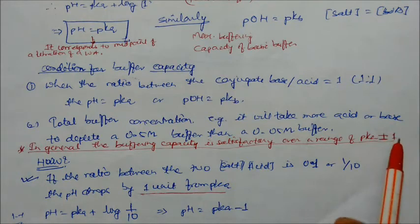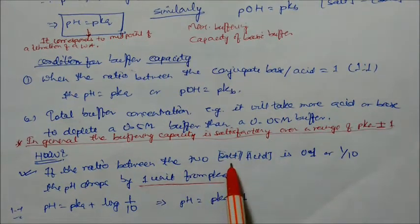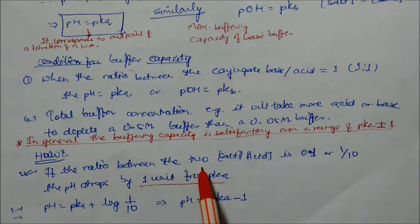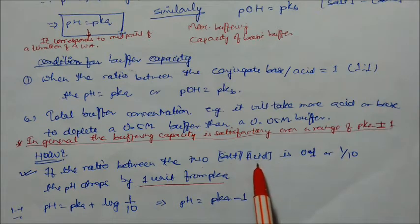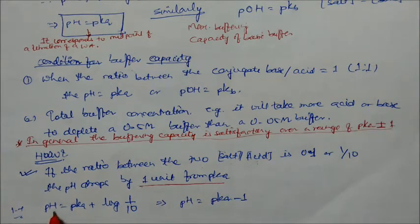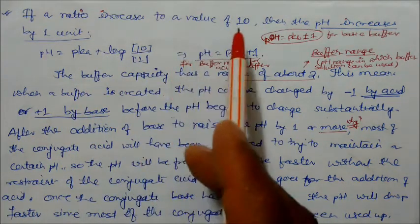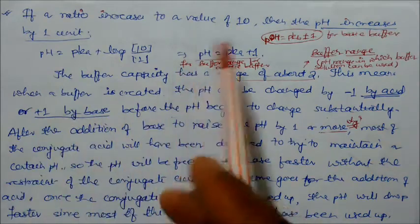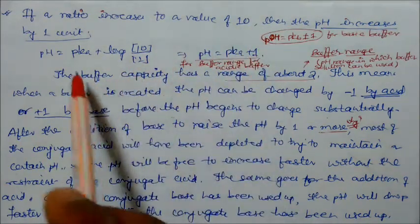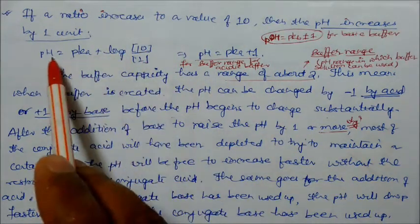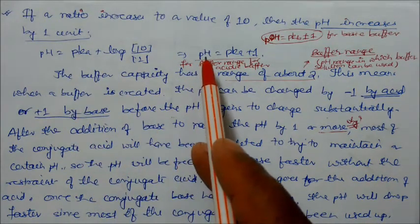In general, buffering capacity is satisfactory over a range of pKa plus or minus 1. If the ratio of salt to acid is 0.1 (that is 1:10, meaning acid is 10 times the salt), the pH drops by 1 unit from pKa. So pH equals pKa minus 1. Similarly, if the ratio increases to 10 (salt is 10 times the acid), the pH increases by 1 unit, giving pH equals pKa plus 1.